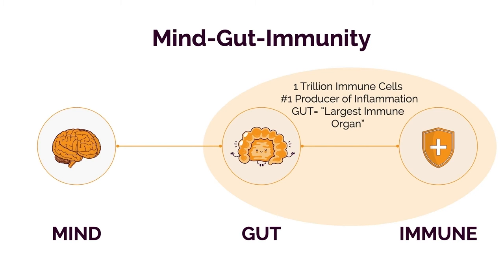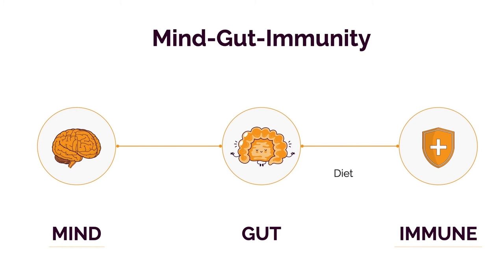So what are the principles we can leverage to favorably optimize the three parts of this axis? The answer, as I've said earlier, are the big five epigenetic environmental triggers: diet, digestion, sleep, stress, and exercise — the same five factors I mentioned.